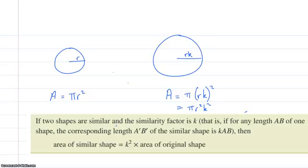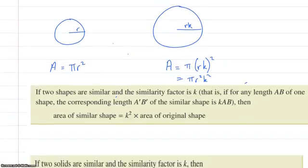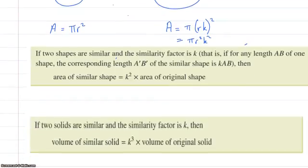So it's true for all shapes in two dimensions and in fact it's true for all shapes in three dimensions. If you have two solids that are similar and the similarity factor is k well then the volume instead of being k squared would actually be k cubed and it's simply because you've got the three dimensions that you're actually getting bigger in so therefore you have to multiply by k cubed.